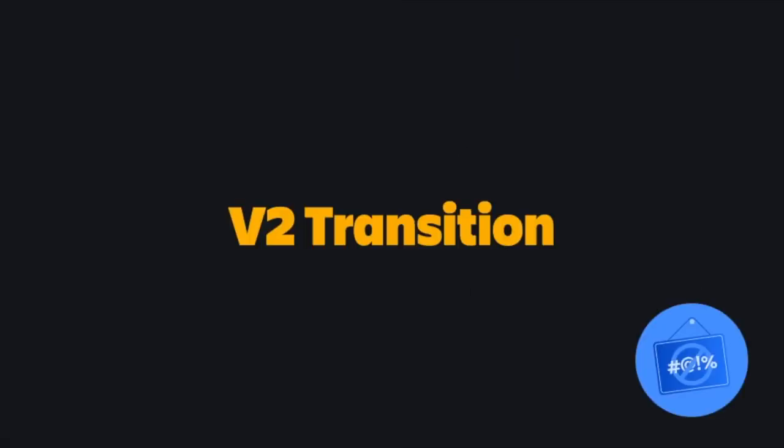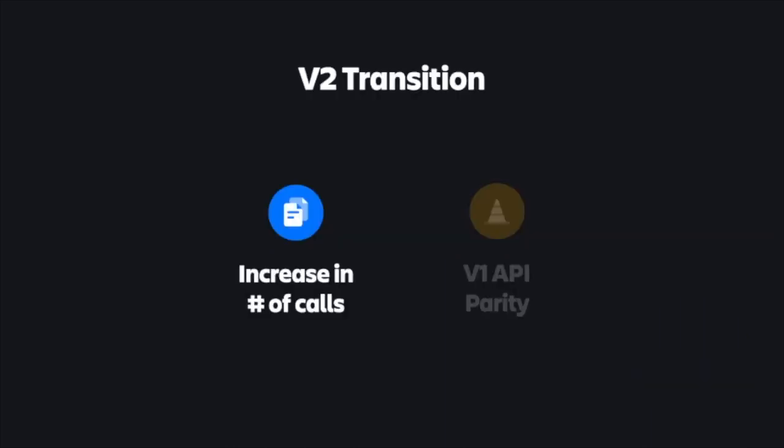We also want to call out a couple of pain points as we transition to these V2 APIs. In many cases, the number of calls required to be made to the V2 API when compared to the V1 API will increase. We need to move forward with more granular endpoints, but we have heard and seen the performance impact this can have on apps, because HTTP requests are slow and unreliable, and the fewer requests you can make, the better. We have some exciting additions on the way that I'll show a bit later in this talk, and we're actively working to address it by finding ways to safely cut down on the amount of calls required from the client.